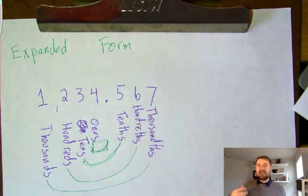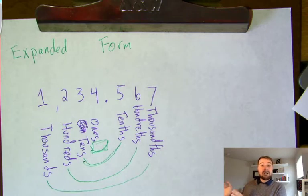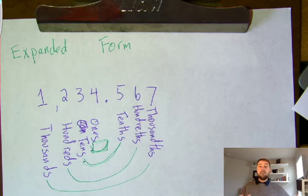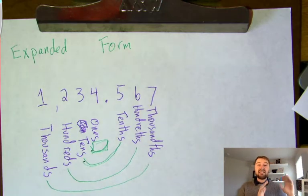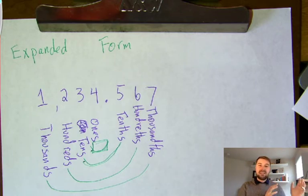On the left side of the decimal place, all of our words end in 'S' because that represents a whole number: thousands, hundreds, tens, and ones. On the right side, we've got 'THS' at the end of each word because 'THS' represents a fraction. So if we have a tenth, that means one of a tenth of something—these are fractions on the right side.